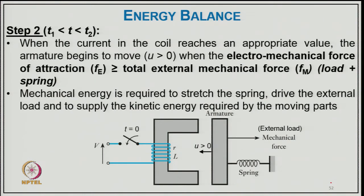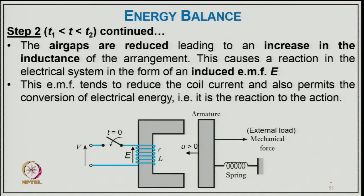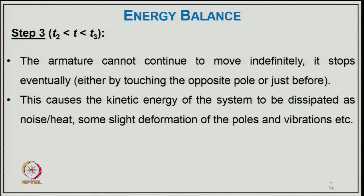Step 2: from t₁ to t₂, when the current reaches an appropriate value the armature begins to move (u > 0) when the electromagnetic force f_e exceeds the total external force f_m (load plus spring). Mechanical energy is required to stretch the spring, drive the load, and supply kinetic energy to the moving part. As air gaps are reduced, the inductance increases, causing an induced EMF e in the electrical system which tends to reduce the coil current — this is the reaction to the action, and it permits conversion of electrical energy. An induced EMF is generated in the coil due to the motion.